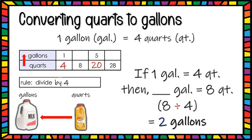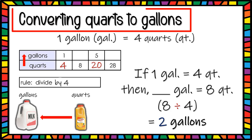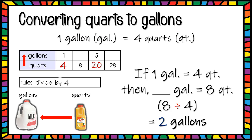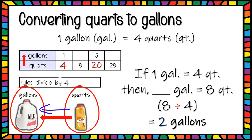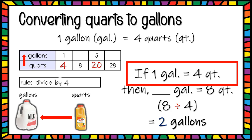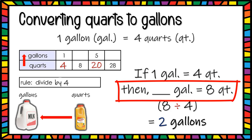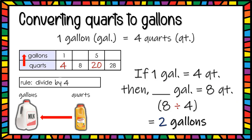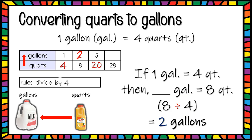Now let us look at the reverse — the opposite. We are going to convert quarts to gallons. In other words, we are converting from a smaller unit to a larger unit. When converting from a smaller unit to a larger unit, you divide. If one gallon equals 4 quarts, how many gallons will 8 quarts equal? We divide by 4 because there are 4 quarts in one gallon. So 8 divided by 4 gives us 2 — therefore 8 quarts equals 2 gallons.